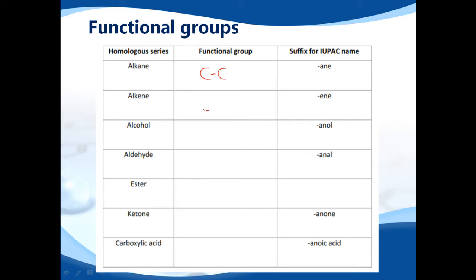The alkenes, we have a carbon to carbon double bond. The alcohols, we have an OH group.